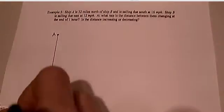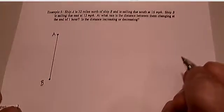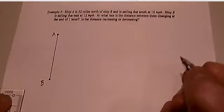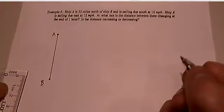Ship A is 32 miles north of ship B. Let's go ahead and draw that. So ship A is 32 miles north of ship B and is sailing due south at 16 miles per hour.